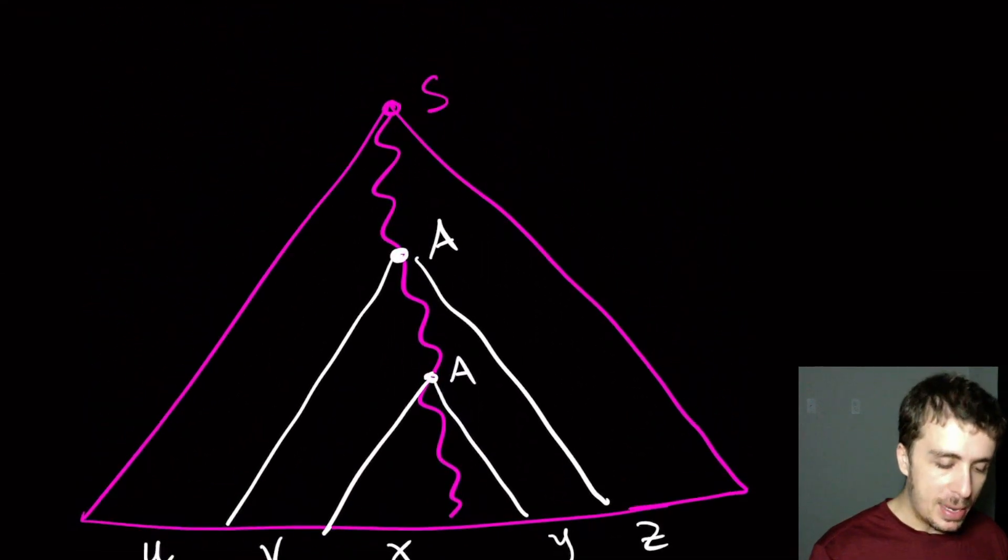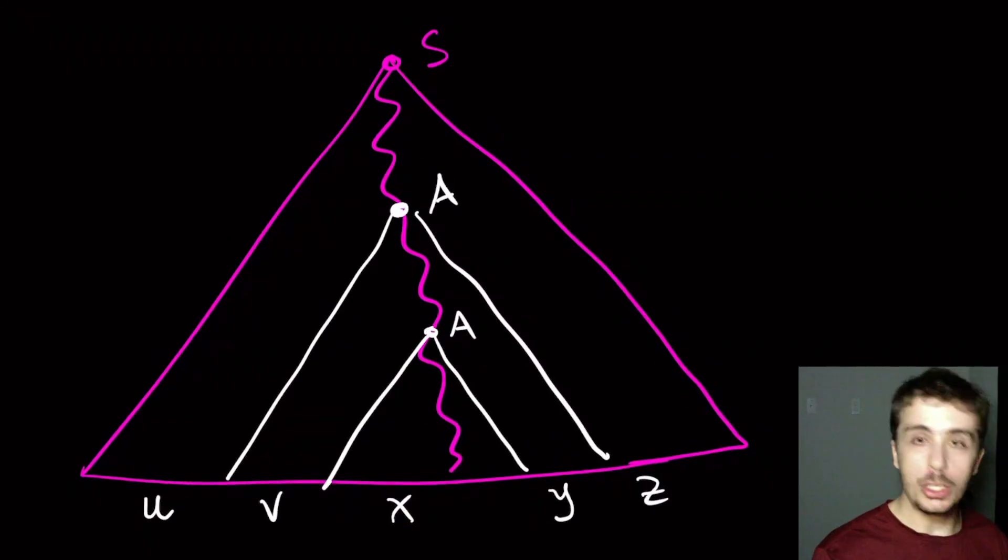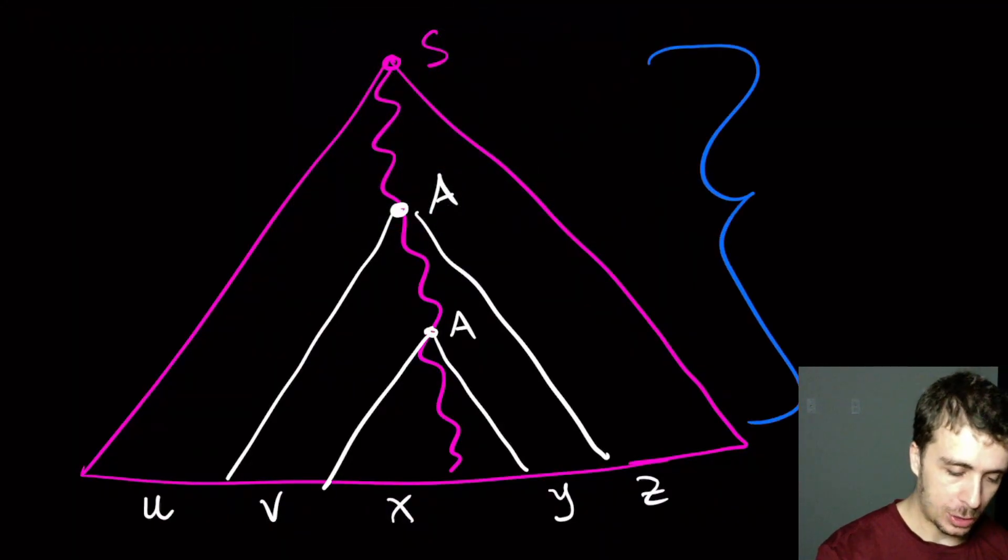And the way that we do that is we make the parse tree even taller. So if we get the height of the tree to be at least two n plus one instead of n plus one, then what we must guarantee is that some variable must have repeated three times.